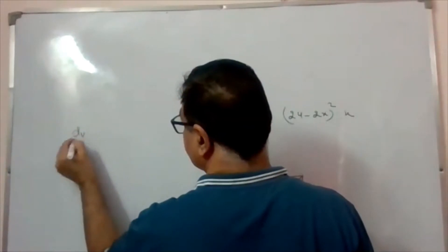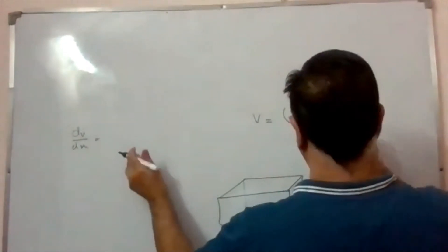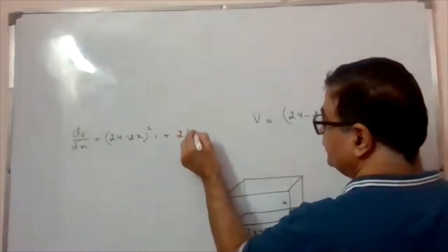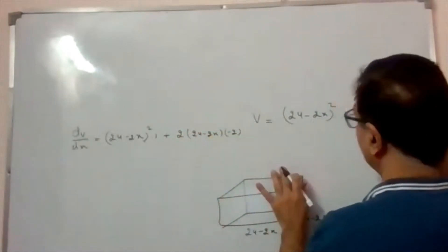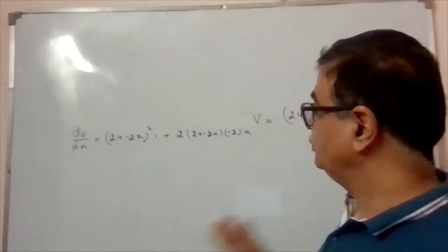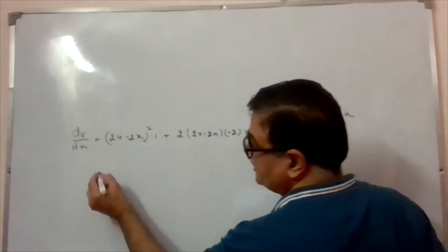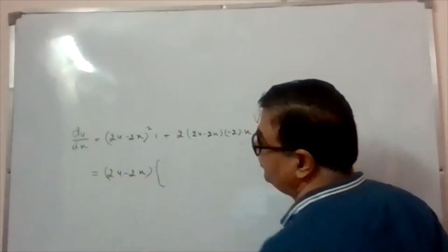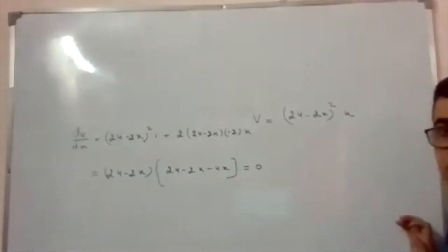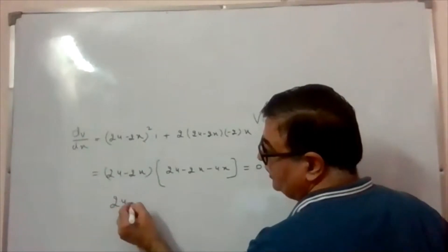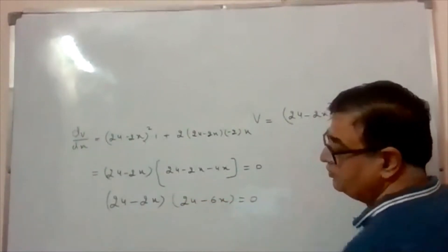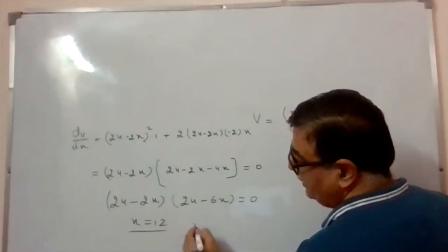We differentiate: dV/dx = (24 − 2x)² × 1 + x × 2(24 − 2x)(−2). Setting this equal to zero, we take (24 − 2x) as common, leaving (24 − 2x) − 4x = 0, which gives 24 − 6x = 0. So x = 4 or x = 12.